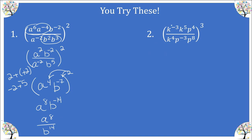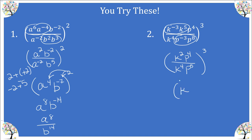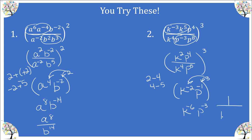Number two: applying the product rule, we add our exponents to get positive two at the top, and negative three plus eight gives us five at the bottom. Now applying the quotient rule: two minus four gives negative two for k, and four minus five gives negative one for p, all raised to the power of three. Applying power to a power, multiplying the outside exponent by every exponent inside the parenthesis, we get k to the negative six and p to the negative three. Both need to be reciprocated, giving one over k to the sixth times p to the third.